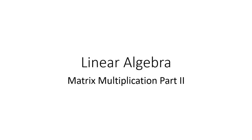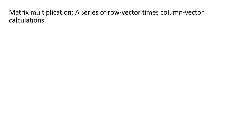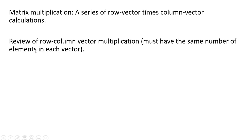Hello, we're going to do some linear algebra. This is going to be matrix multiplication part two. Matrix multiplication is just a series of row vector times column vector calculations. Let's do a review of row-column vector multiplication.